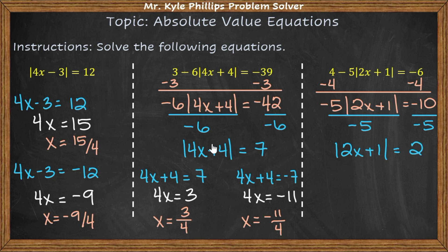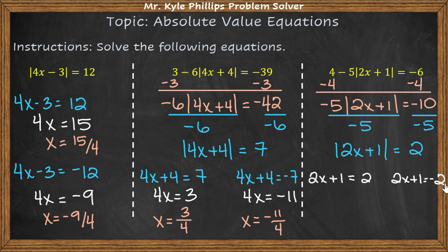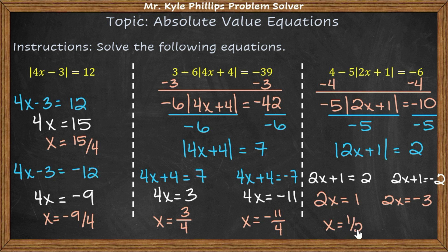Just as before, I take the expression 2x plus 1 and set it equal to 2 and negative 2. So I have 2x plus 1 equals 2 and 2x plus 1 equals negative 2. This gives me 2x equals 1 and 2x equals negative 3, so x equals 1 over 2 and x equals negative 3 over 2.